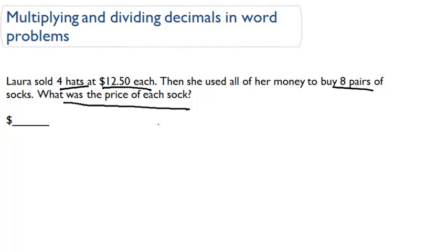To do this, we're going to need to do some multiplication to figure out how much money did she make selling those hats. Each hat was $12.50, and she sold four of them. We're going to need to add some place-holding zeros here.